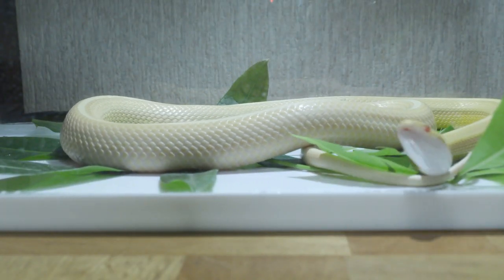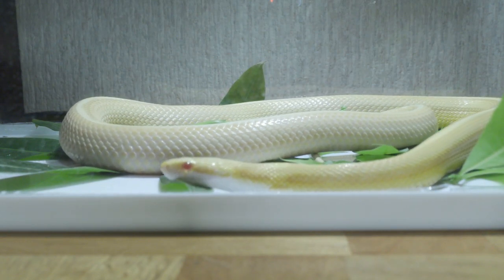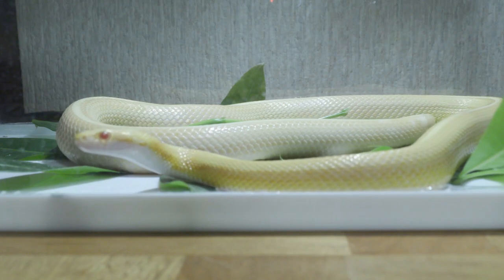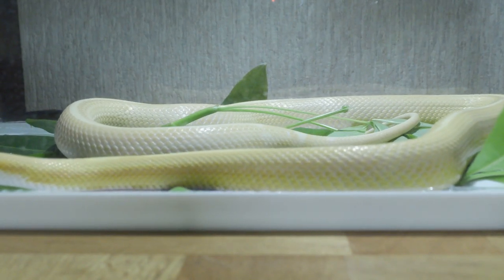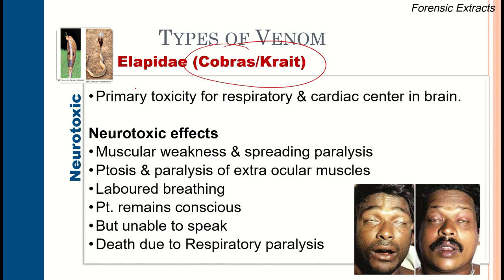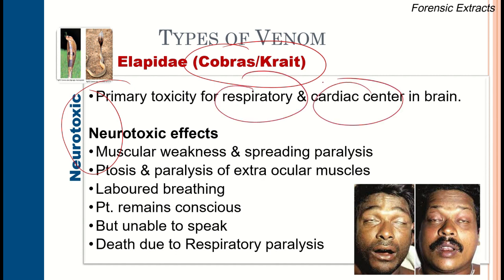Regarding venom types: Elapidae such as cobra and krait produce neurotoxic venom, with primary toxicity targeting the respiratory and cardiac centers in the brain. Signs and symptoms include muscle weakness, spreading paralysis, ptosis, paralysis of extraocular muscles, labored breathing due to respiratory failure, and the patient remains conscious but cannot speak. Death is ultimately due to respiratory paralysis.